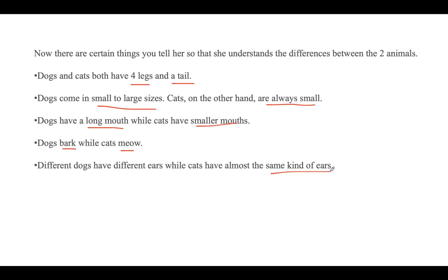After explaining the differences clearly, you take her back home and show her pictures of different dogs and cats — this is the testing phase. You ask her what each picture shows. If she can differentiate between a dog and a cat, you have successfully taught her. If not, you teach her more until she correctly calls the dog a dog and the cat a cat.